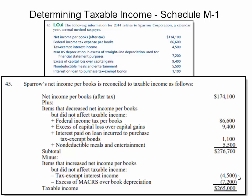Those items would be the $4,500 of tax exempt interest income and then the excess of MACRS over book depreciation. Once we have all this information listed as what needs to be added and subtracted, we can derive taxable income, and that's what they've asked us to do on this problem.